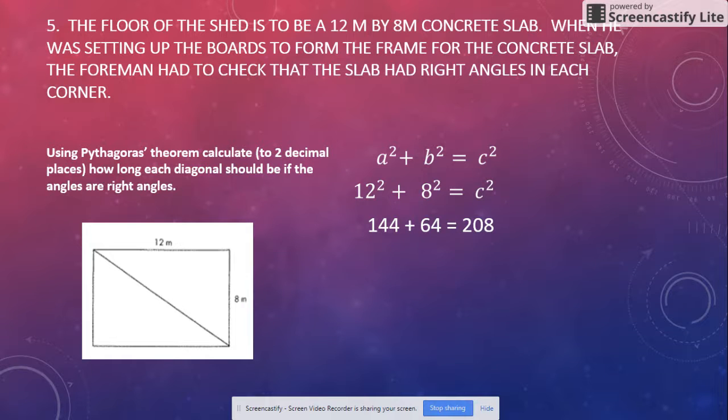Now we're going to do the square root of 208, and you're going to put your answer in to two decimal places with your meter sign. That's it chickens, awesome.